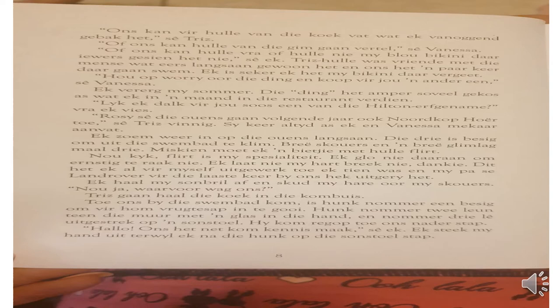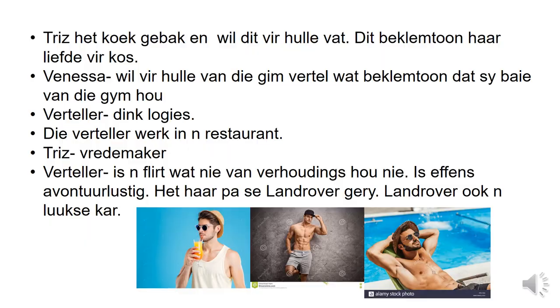The storyteller decides to go over and meet the boys. She takes off her sunglasses and flips her hair. When they arrive at the pool, one boy is pouring juice, another is leaning against the wall with a glass, and the third is sunbathing. Just as she goes to introduce herself, her flip-flop catches on the uneven paving and she trips, falling right on top of the boy on the sunbed.